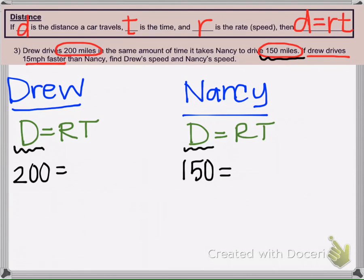So Drew, his speed is 15 more than this person. So R is going to be, so I'm going to let R be Nancy's speed.